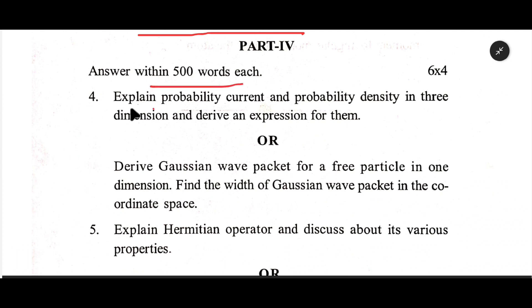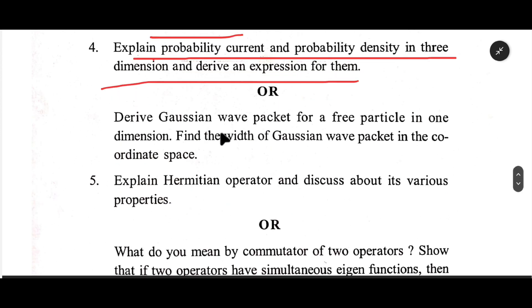Answer within 500 words each. a. Explain probability current and probability density in three-dimension and derive an expression for them. b. Derive Gaussian wave packet for a free particle in one-dimension.